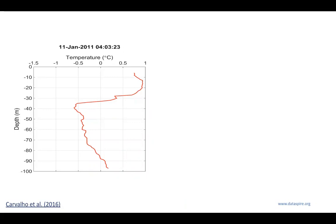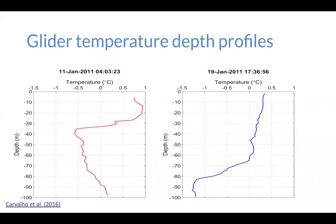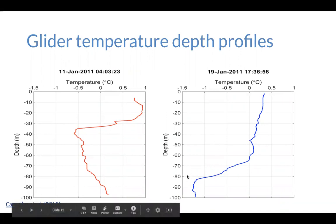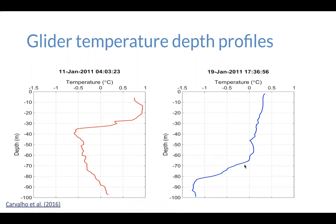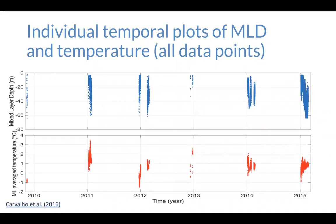Here was one of her graphs — a glider profile from when it goes down and up. On January 11th, 2011, the mixed layer depth is around 30 meters, but looking at the 19th, just six days later, it's down around 70 meters. This spurred her curiosity. The first thing she did was plot data from every single glider profile from 2010 until 2015. Each dot is a piece of data from a different glider profile, and she said, 'I can't really make any sense of this.'